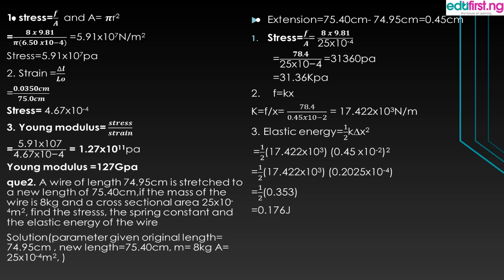Question two: A wire of length 74.95 centimeters is stretched to a new length of 75.4 centimeters. The mass is 8 kg and the cross-sectional area is given as 25 times 10 to the power minus 4. Find the stress, strain, and elastic energy. The extension is the final length minus the original length, which equals 0.45 centimeters. Stress equals force over area — mass times g divided by the area: 8 times 9.81 divided by 25 times 10 to the power minus 4, which gives a stress of approximately 3,313.60 Pascal, or about 3.31 kilopascal.